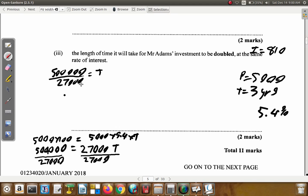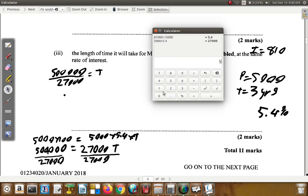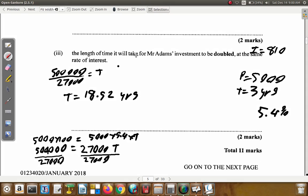We're going to divide the 500,000 by the 27,000. 500,000 divided by 27,000 equals 18.52. The time becomes 18.52 years. That's the length of time it will take for Mr. Adams' investment to be doubled at the same rate of interest.